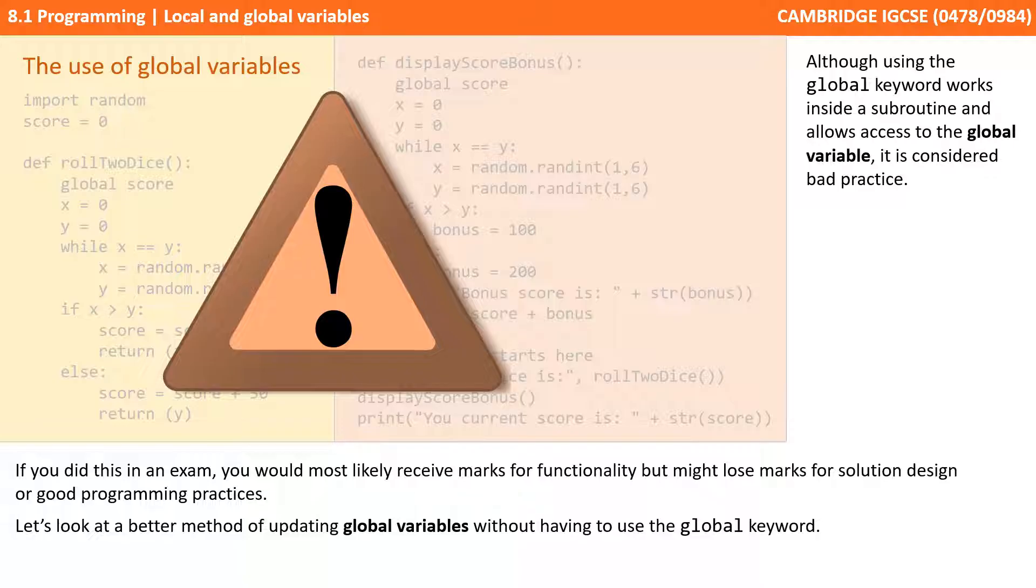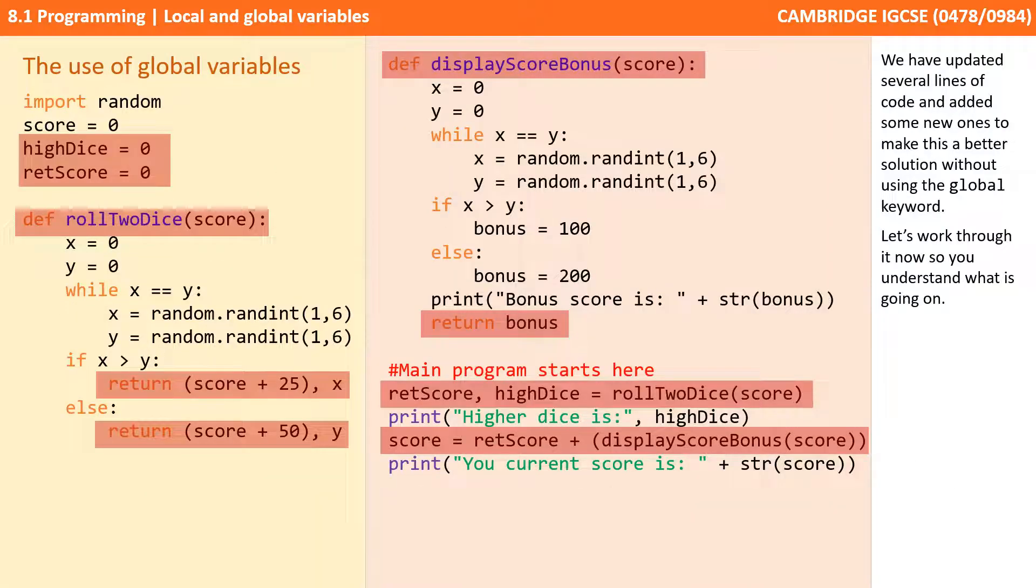Let's look at a different method you can use for updating global variables without having to use this global keyword in Python. So here we've updated several lines of code and added some new ones to make this a better solution without using the global keyword inside the subroutines. Let's work through it now so you understand what's going on.